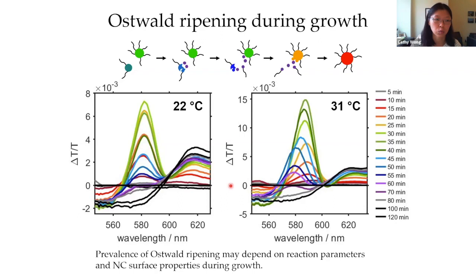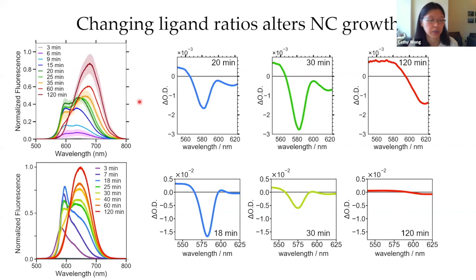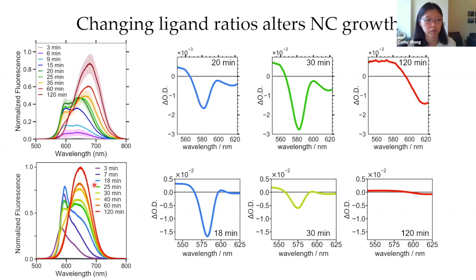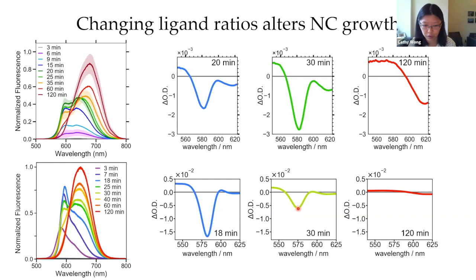One more result: changing the ligand ratios. We're using octylamine and oleic acid, two common ligands for this reaction. If we keep the same total amount of ligand but change the ratio of those two, we see a distinct change in the process of nanocrystal growth in the fluorescence spectra, as well as differences in surface quality based on the size of spectral features. In one example there's not much blue shift as a function of growth time, but in another the peak does blue shift as nanocrystals continue to grow, indicating Ostwald ripening is more pronounced in the second case.